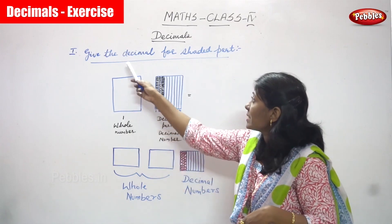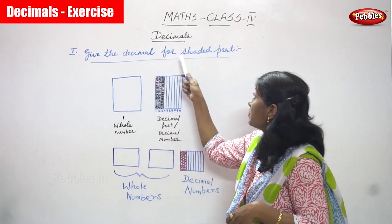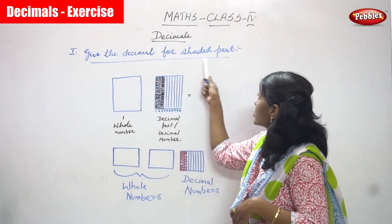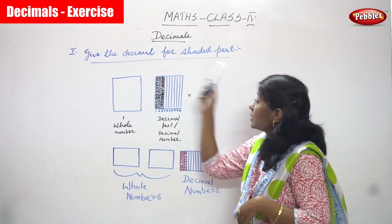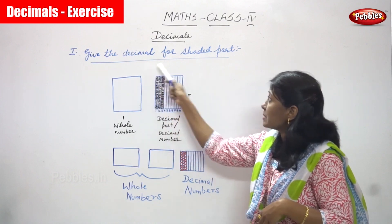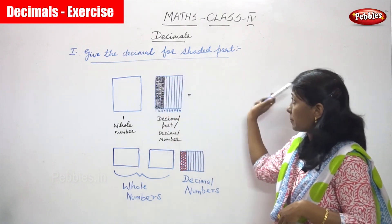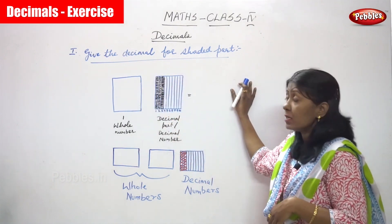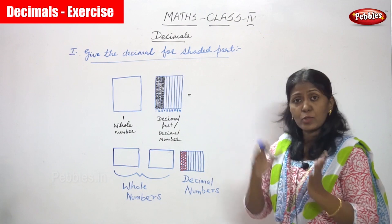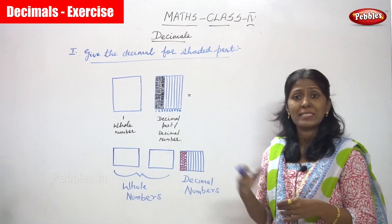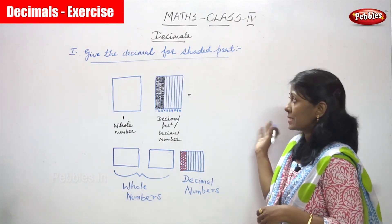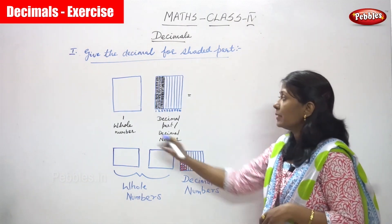Now, we are going to see — give the decimal for shaded part. This is the exercise. We have already seen all the examples, and now we are going to start the exercise. Let's start the problem.